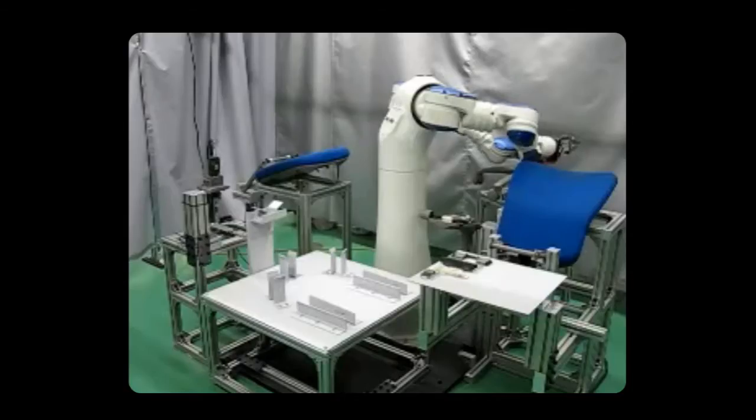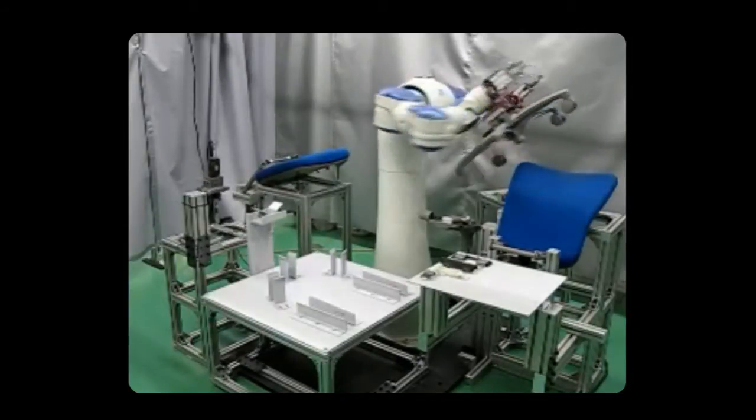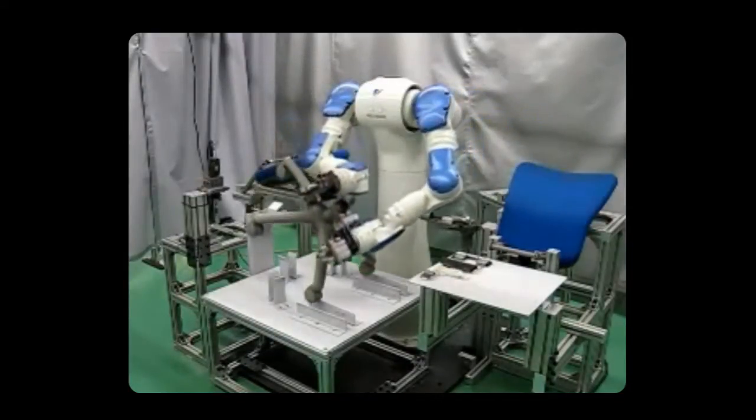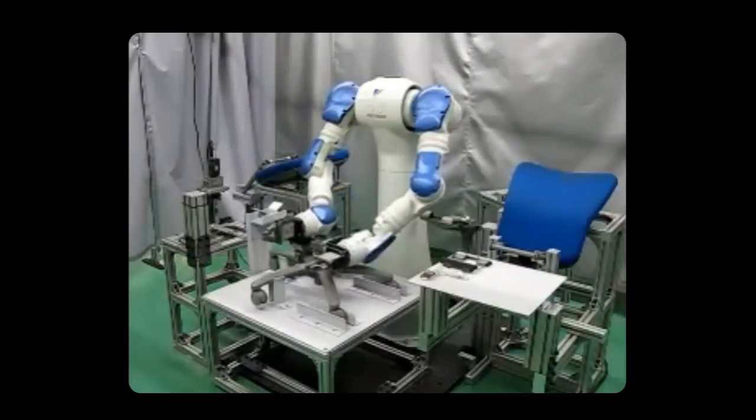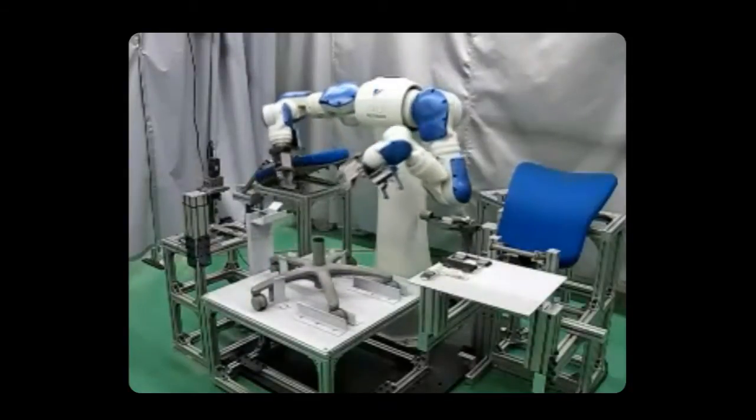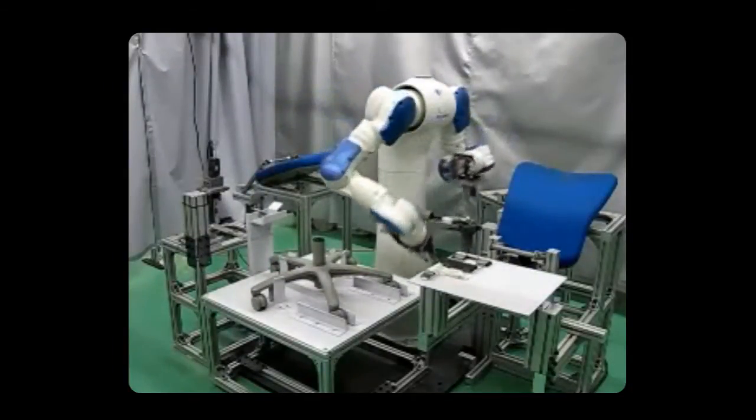Many people believe that robots can do something as simple as pick up an object off a table, but the reality is that isn't possible with today's software. Robots are very good today at doing very repeated motions, but if anything changes within the environment, that functionality tends to break down, and so something as simple as picking up an object off a table is very difficult.